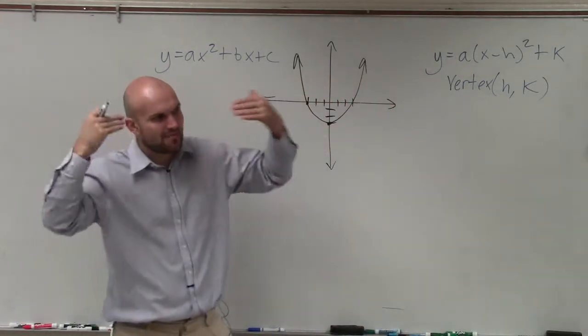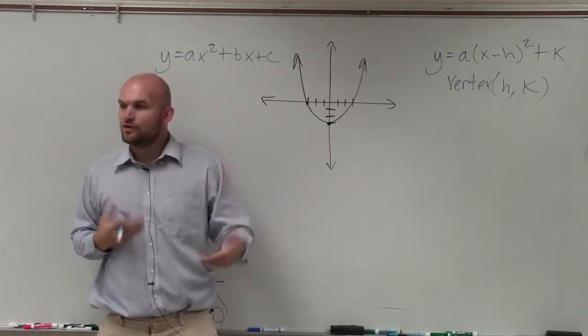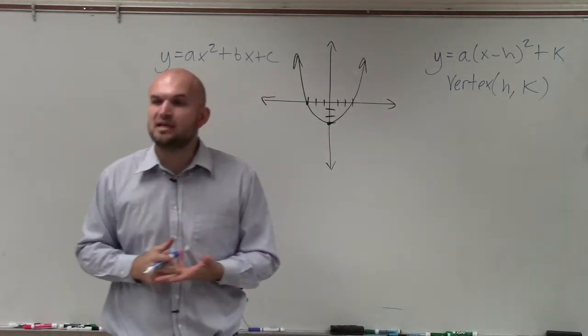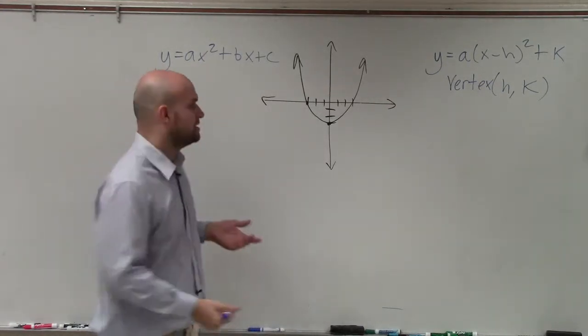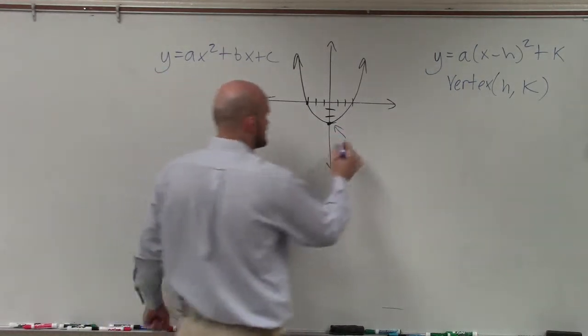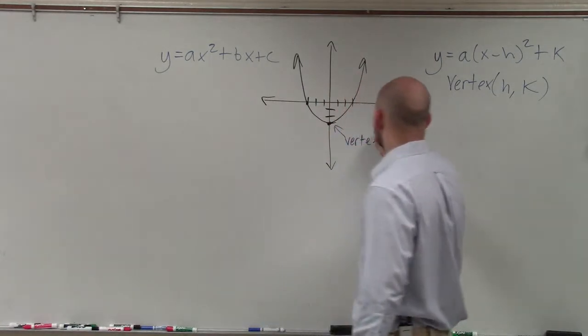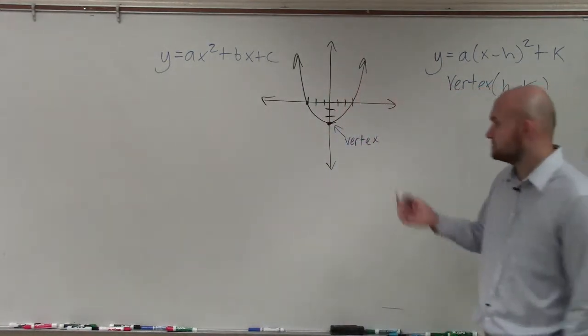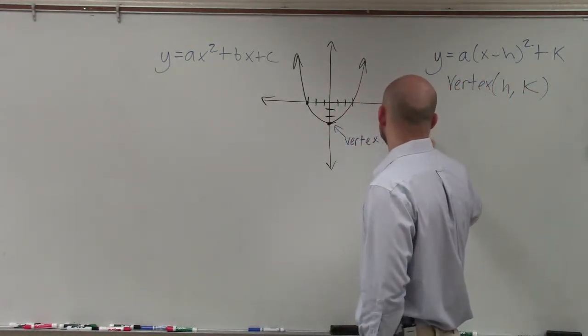So again, to remind you what is the vertex, the vertex is either the maximum or the minimum point of a parabola. So you can see here is the minimum point. That is our vertex. So what is that point for the vertex? Well, that's 0 comma negative 3.